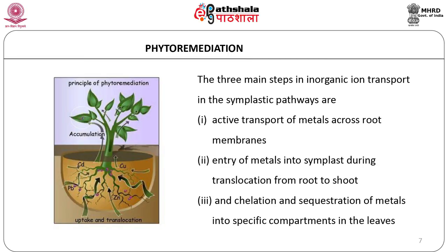Phytoremediation of heavy metals from the environment serves as an excellent example of plant-facilitated bioremediation and its role in removing environmental stress. The ideal phytoremediator is a species that creates a large biomass, grows quickly, has an extensive root system, and must be easily cultivated and harvested. Examples include plants like Thlaspi and Brassica gentica.